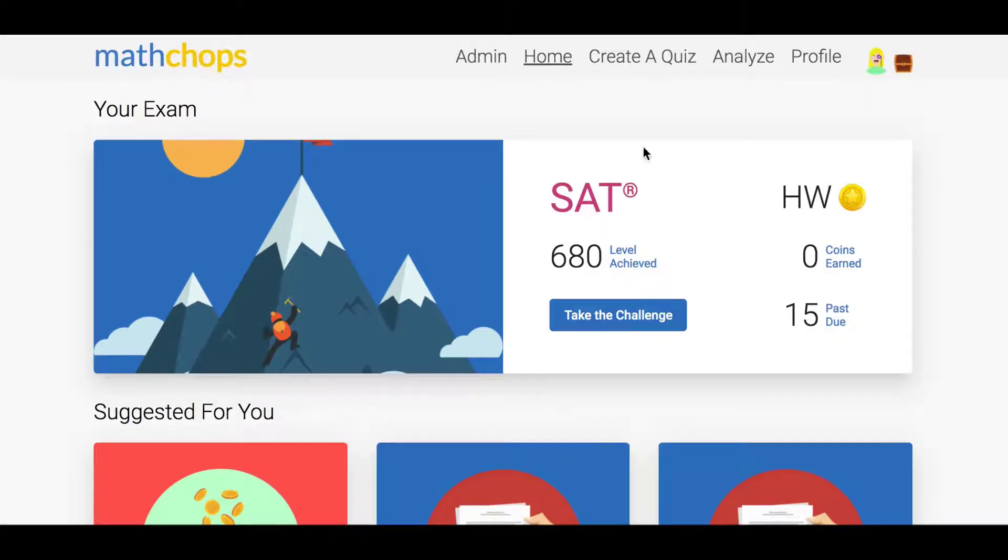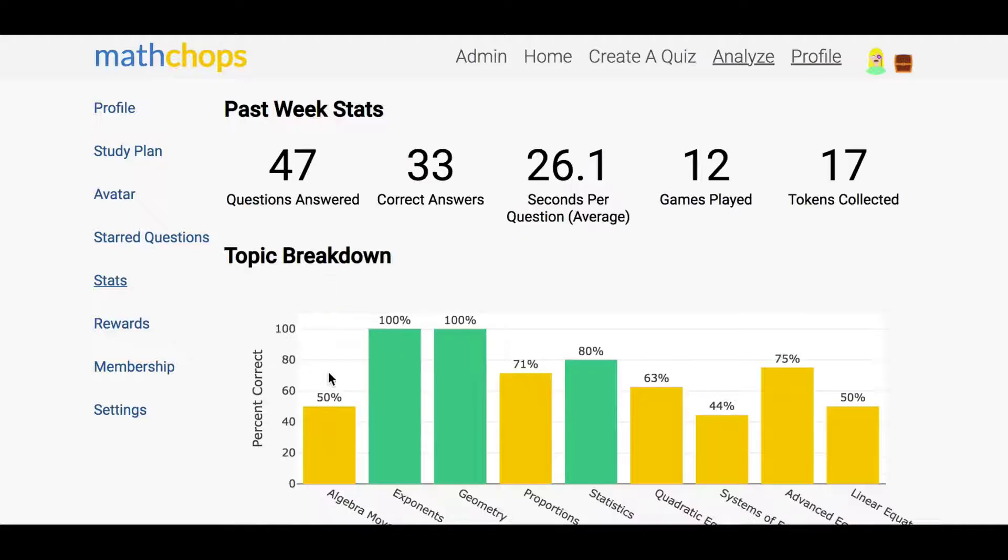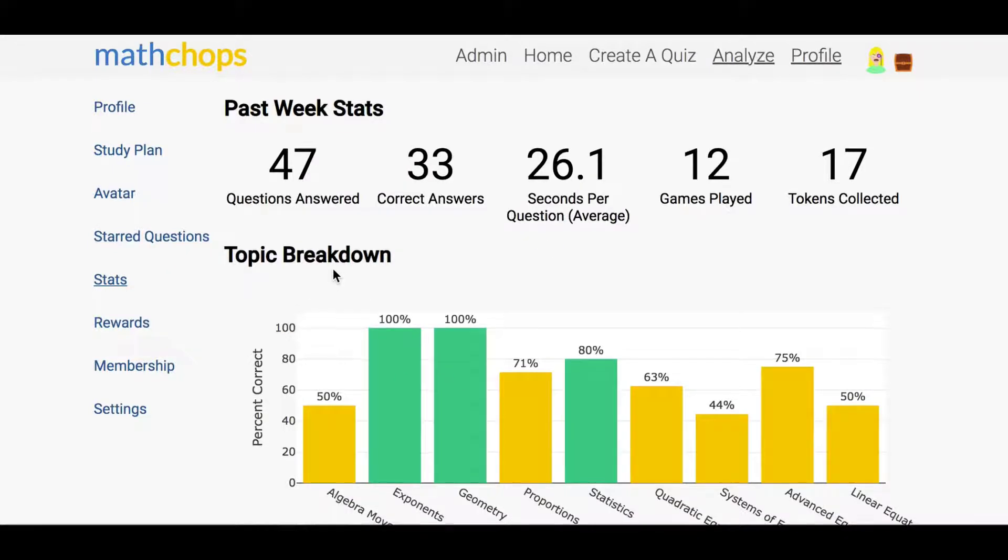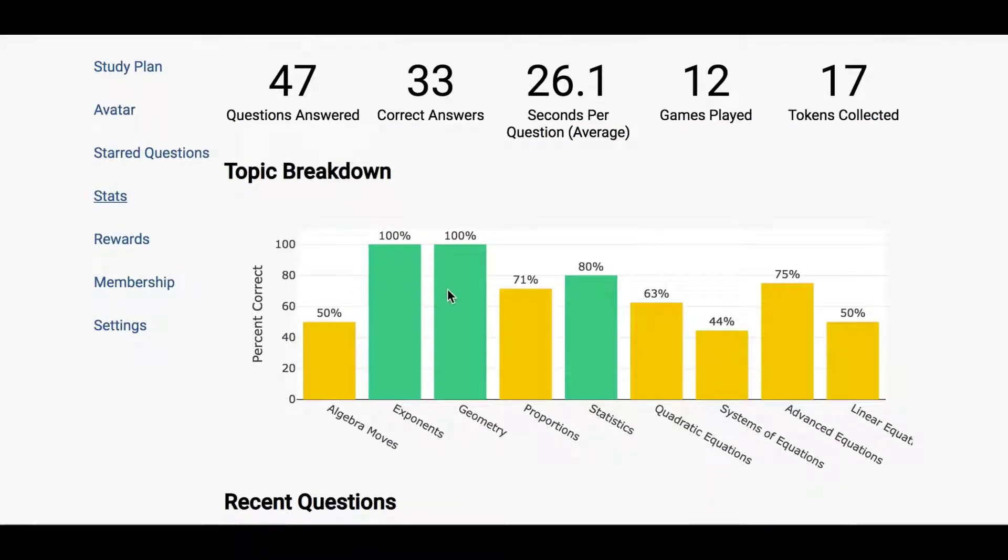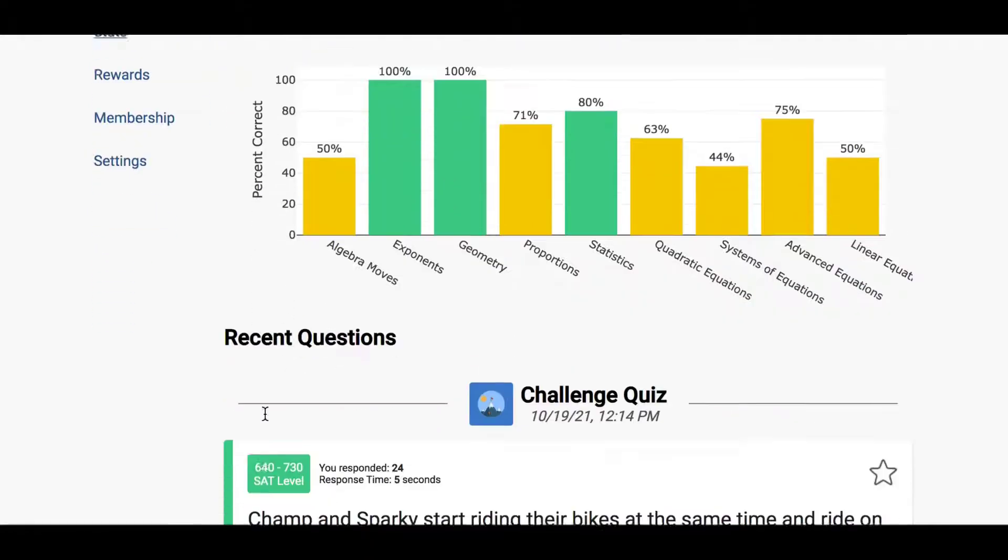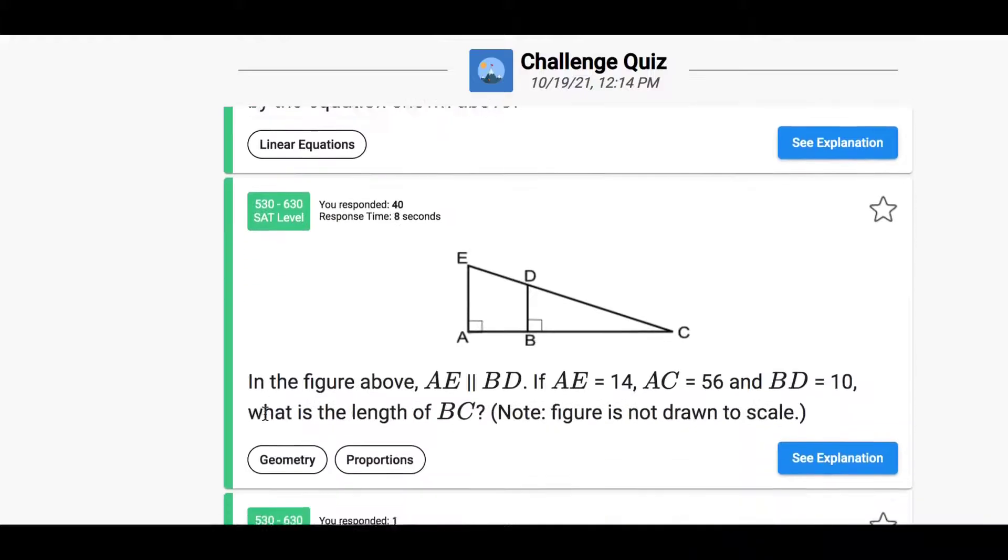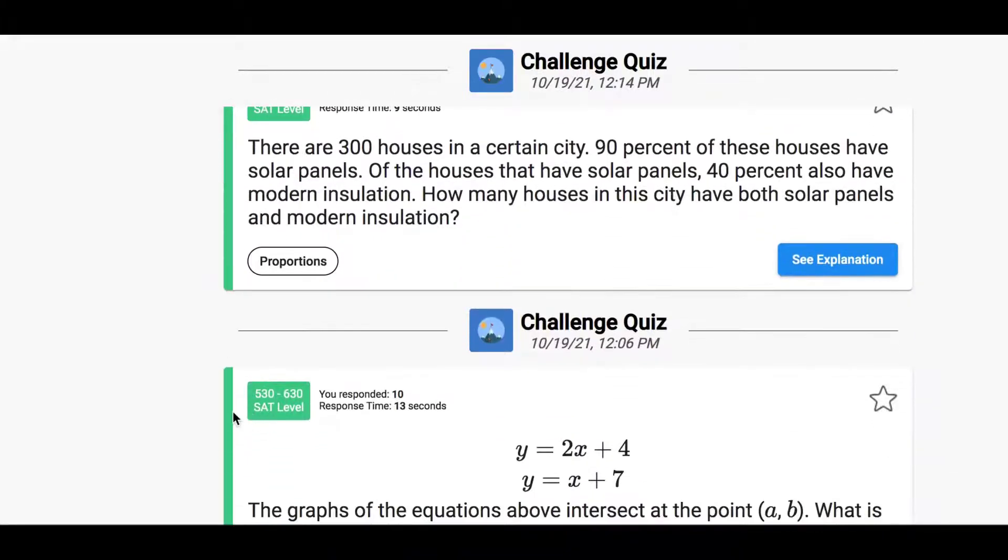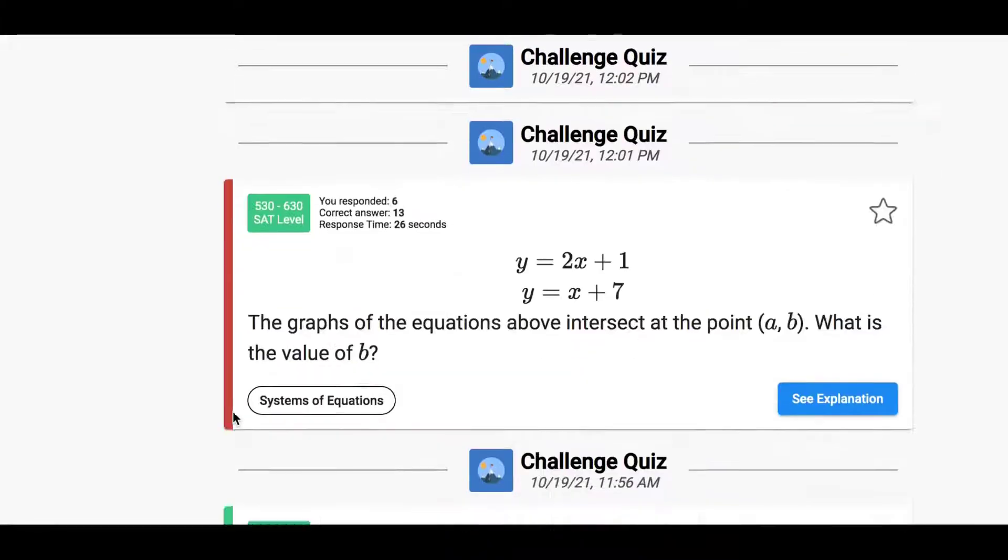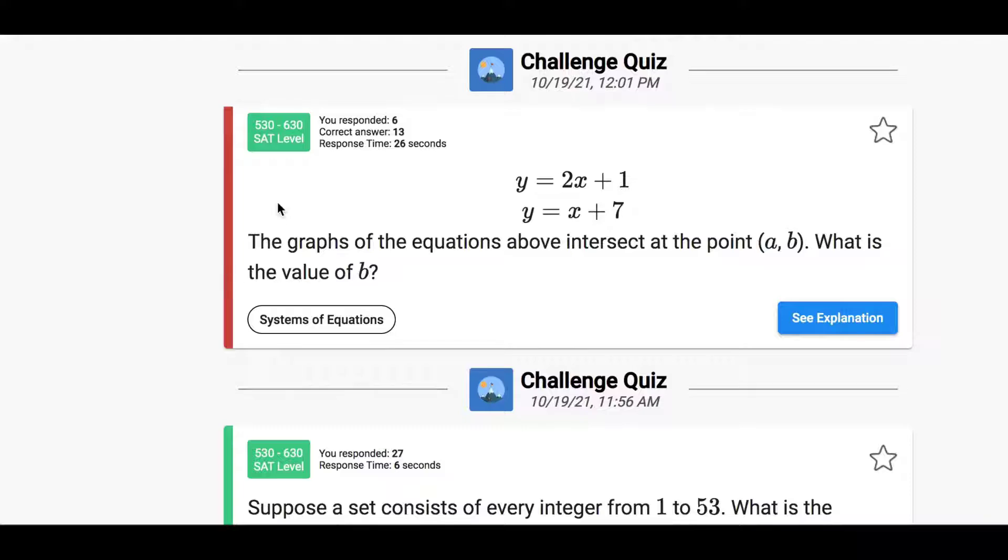When you meet, have the student share their screen and go to the Analyze page. From here, you can see all their stats, the categories they did well in, the categories they might need a little extra help in. The very first thing that I'll do is just review the questions that they did. All the green ones are the ones they got right, but the red ones are the ones they got wrong.